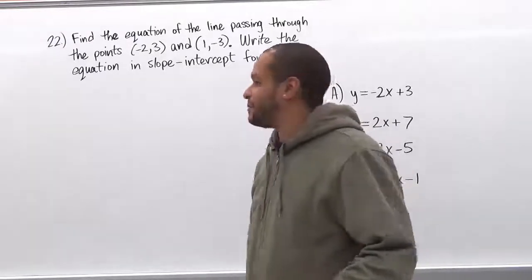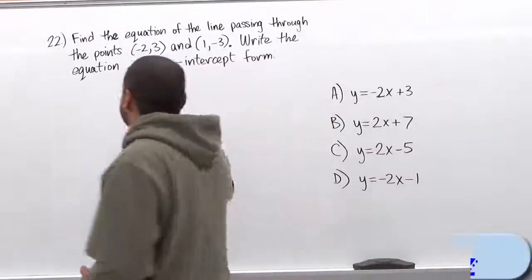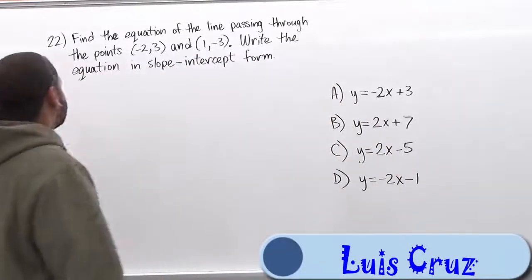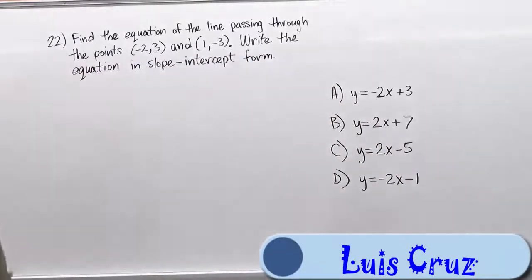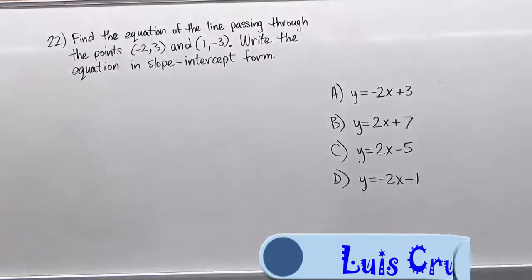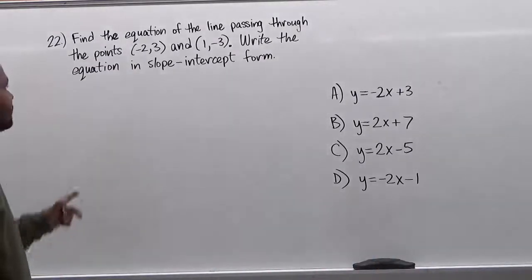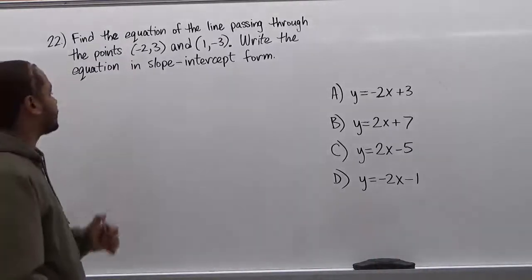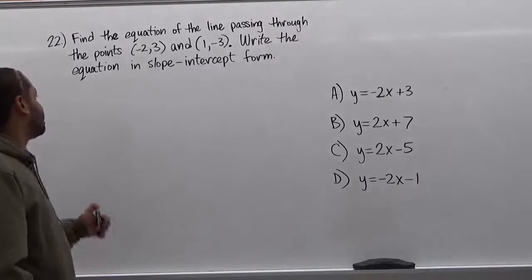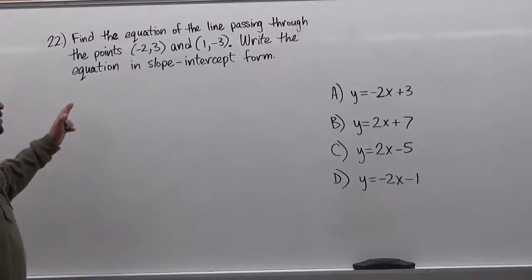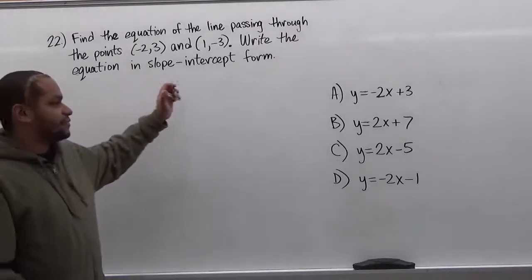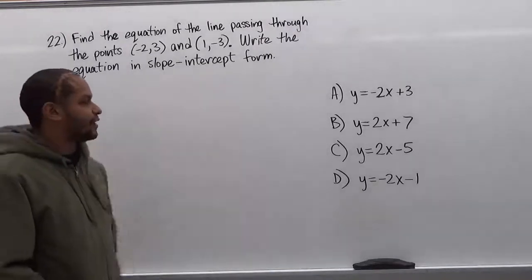Welcome to HelpYourMath.com. In this problem, number 22, we're going to be finding the equation of the line passing through the points negative 2, 3 and 1, negative 3. We're going to write the equation in slope-intercept form.